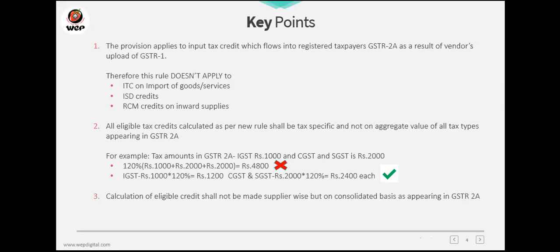The next key point: eligible tax credit is calculated on a tax-specific basis, not on the aggregate value. For example, if IGST in GSTR 2A is 1,000 rupees and CGST/SGST is 2,000 rupees, you must calculate 120% on each tax separately. So 120% of IGST 1,000 gives 1,200, and 120% of CGST/SGST 2,000 gives 2,400. You cannot aggregate all taxes and apply 120% on the total.